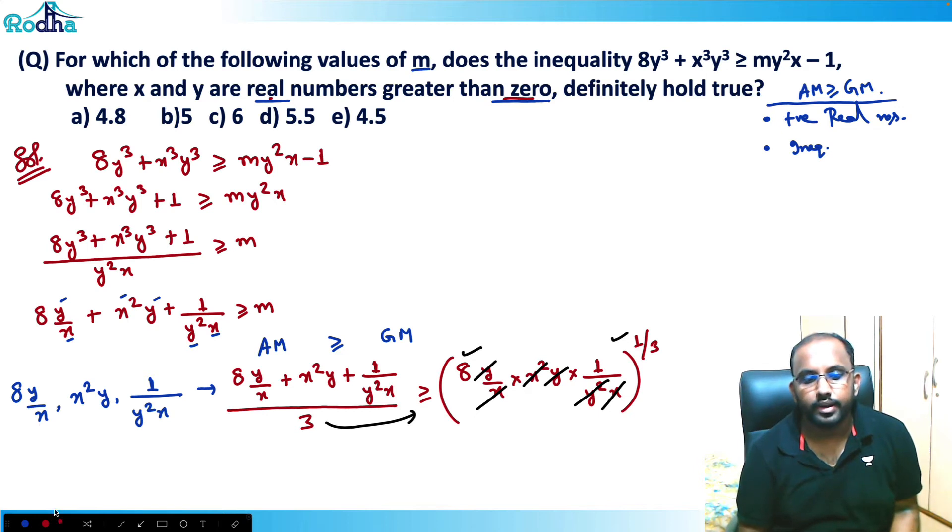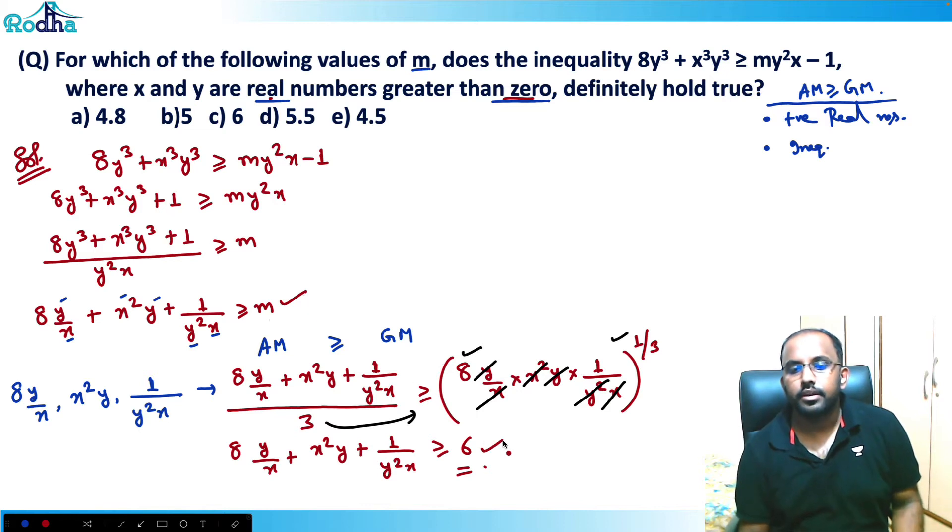So obviously all these power values of y and x will get cancelled. So I am left with 8 cube root is 2, and 3 will get multiplied here. So what I can write now, that 8y/x + x²y + 1/y²x is always greater than equal to this 8 cube root is 2, and 2 times 3 will get multiplied here. This 2 into 3 is equal to 6. That means this is in place of m, it is 6 here. That means m can take 6, 6 is the answer.